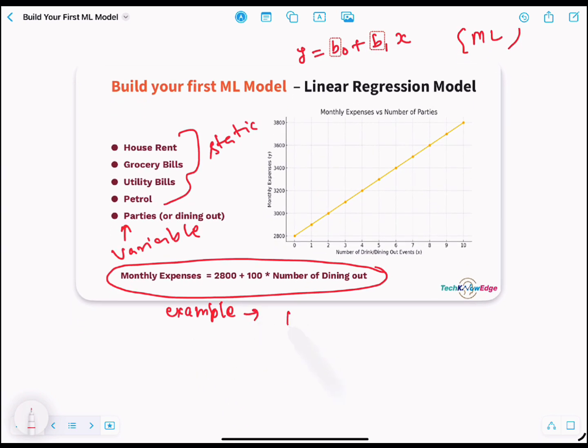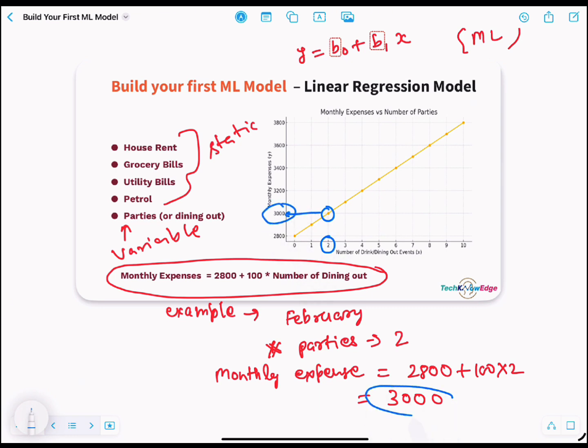So if you had two parties in February, just plug in these values and you get y equals 3,000. And if I look at the graph, on the x-axis, two is the number of parties, which corresponds to 3,000 on the y-axis, and I got there from the point on the line. So if you look at it, instead of just averaging, this model sees the trend - your spending goes up with more parties and adjusts the prediction accordingly.